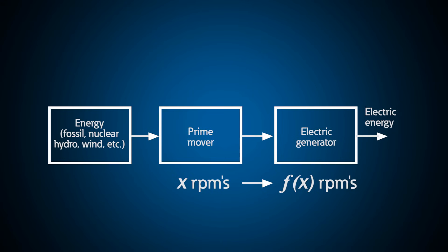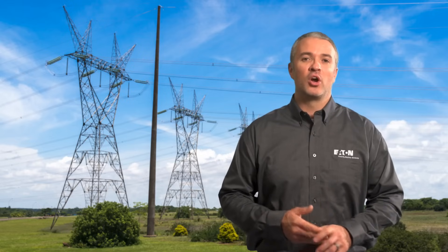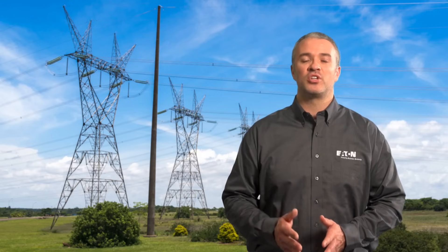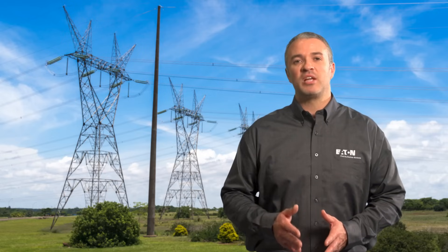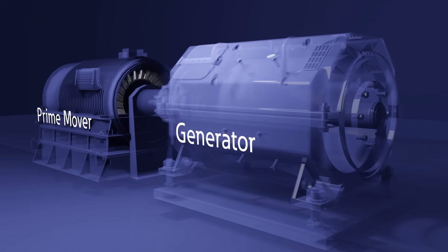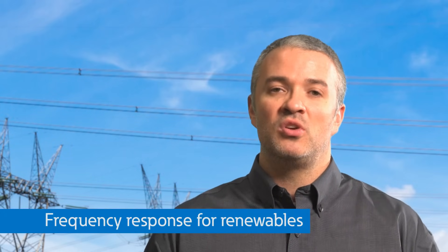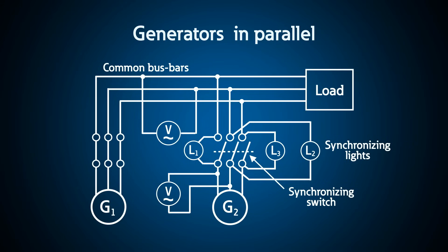Even with large fluctuations in load, large utility generators don't allow the frequency to change much because they are large rotating masses and provide significant inertia to the grid. This is extremely beneficial by stabilizing the voltage, but it could take up to a minute for these units to get frequency back to the proper level if something catastrophic happens. Some widespread blackouts have been related to significant frequency changes in large generators. Wind and solar have a much faster frequency response due to the use of electronics, but they don't provide as much grid stability as large generators with rotating inertia. For large systems, generators are paralleled with each other and must be synchronized.